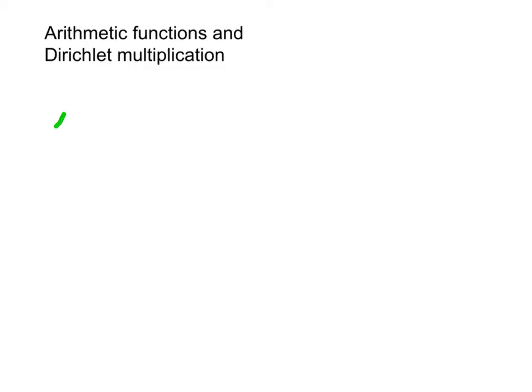Chapter 2: Arithmetic Functions and Dirichlet Multiplication. I'm going to start by defining a couple of functions. The first one is the Möbius function, mu of n.